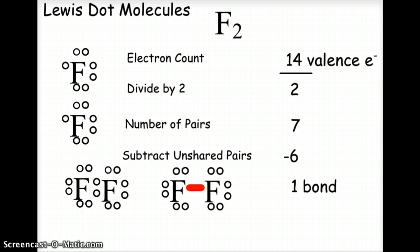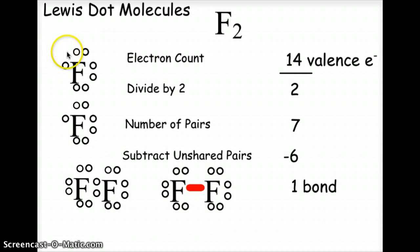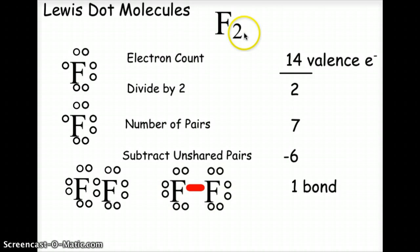When we look at fluorine and deal with the diatomic aspect, we know we have two fluorine atoms. Each fluorine atom has seven valence electrons because they are in the halogen column — all halogens have seven valence electrons. So in an F2 molecule, we have a total of 14 valence electrons.